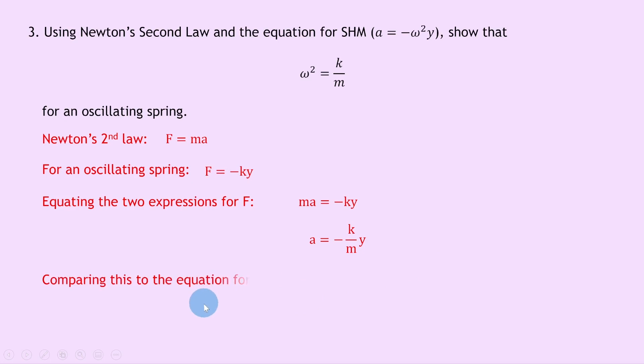Then comparing this to the equation for SHM which we were given in the question, a equals minus omega squared y, then hopefully you can see we have a on the left hand side and then we have y on the right hand side, and then we have this negative k over m term where the negative omega squared term is. And that means by comparing these two, it's hopefully clear that omega squared is equal to k over m.